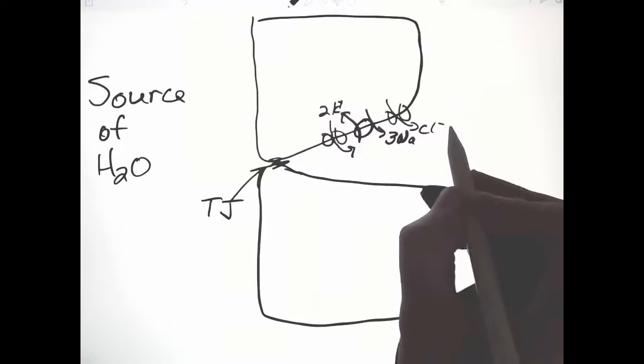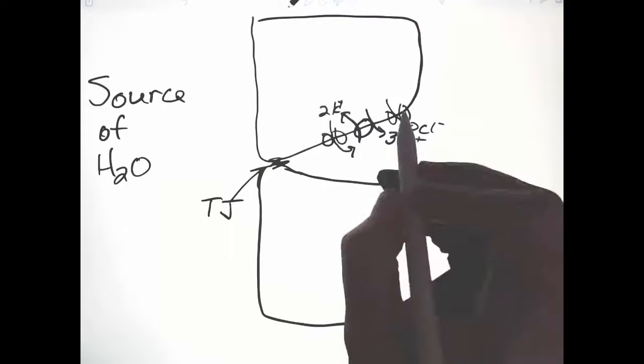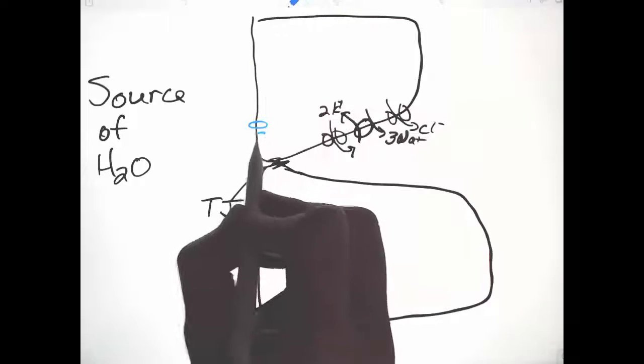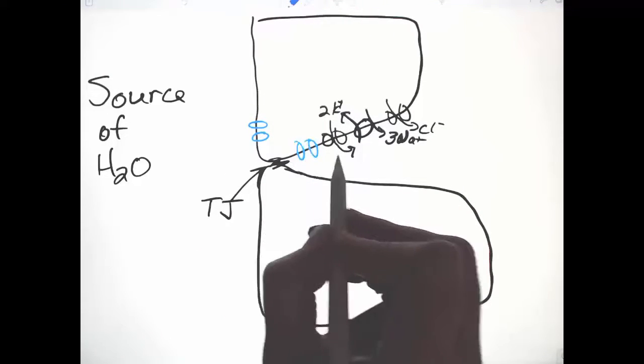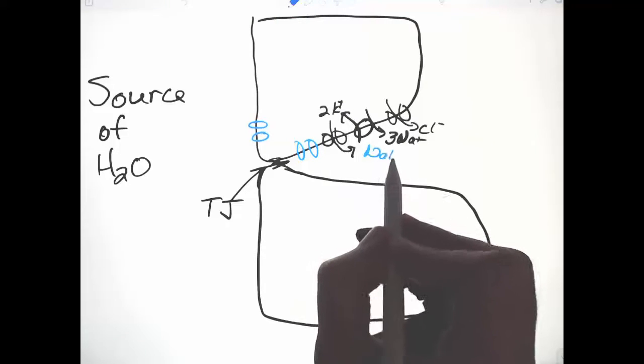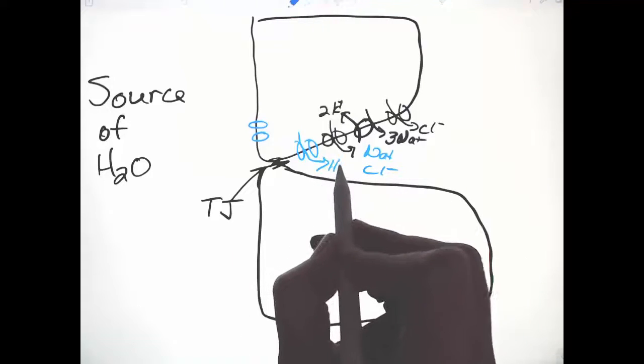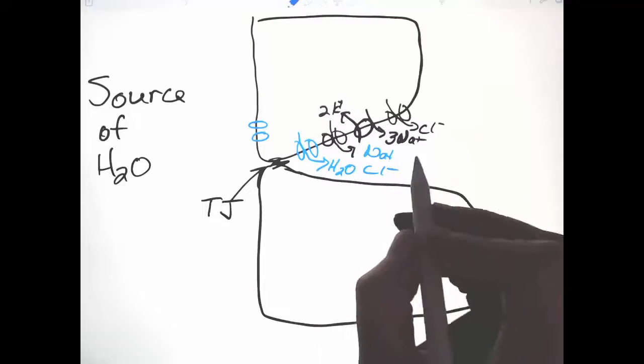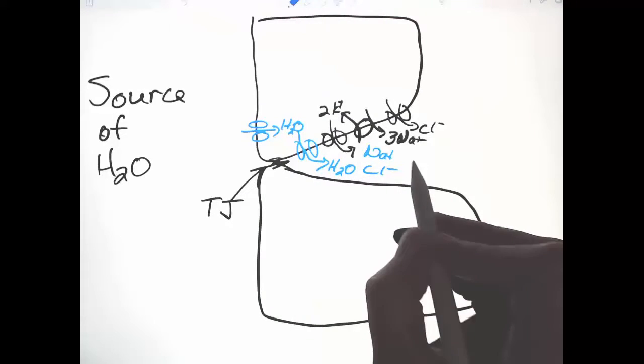Chloride follows passively, attracted by the positive sodiums, and if there are aquaporins, then the high solute concentrations cause water to move in by osmosis, which in turn brings water in from the source.